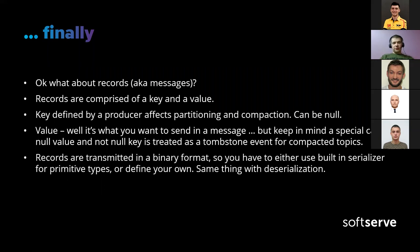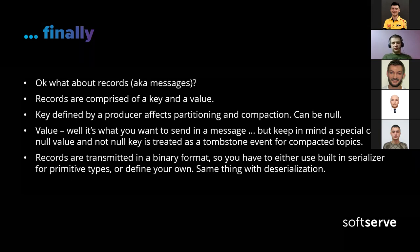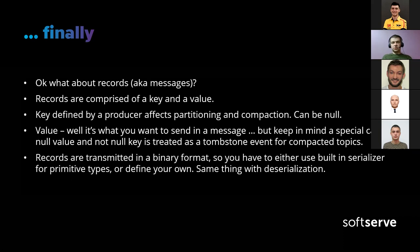Final slide of our 'Kafka in three slides' exercise. We talked about brokers, zookeeper, high-level architecture, topics, partitions, and offsets. A Kafka record is comprised of a key and a value. The key is defined by a producer and affects partitioning and compaction — it can be null. The value is what you want to send — the body of the message. All records are transmitted in binary format between producers and Kafka and then between Kafka and consumers, so you need serialization and deserialization for complex types.